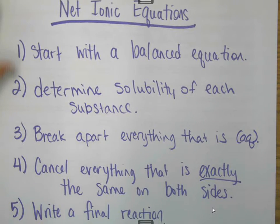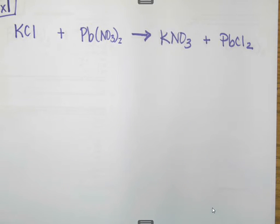I'm going to work two examples for you to show you how some of these things can work. The first example that I have is potassium chloride plus lead-to-nitrate making potassium nitrate and lead-to-chloride.